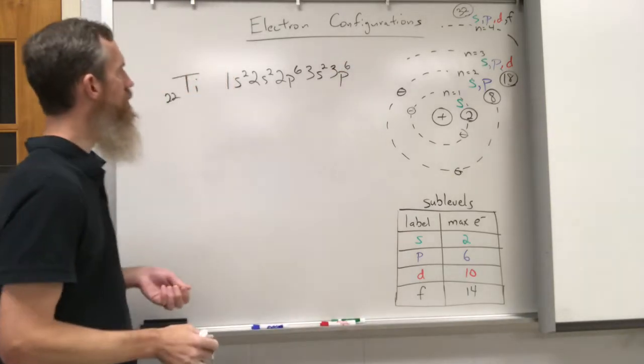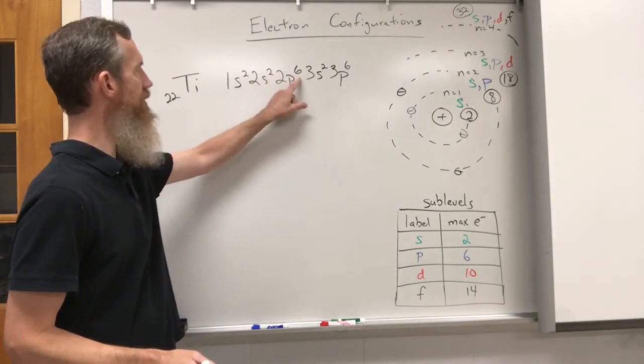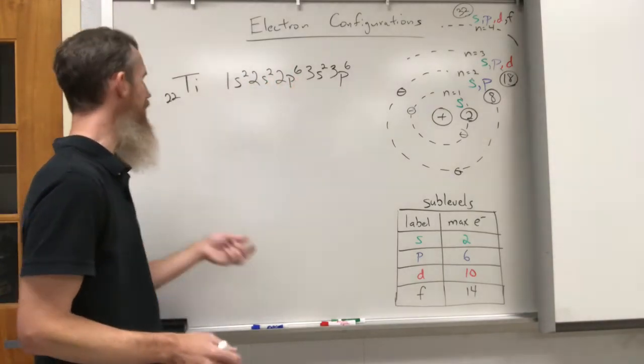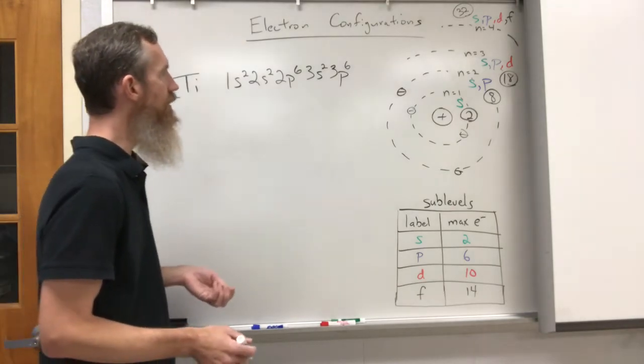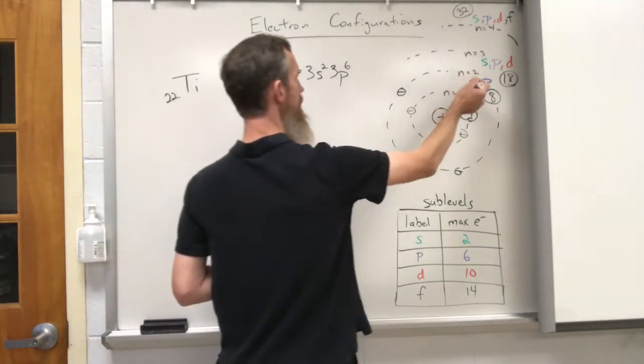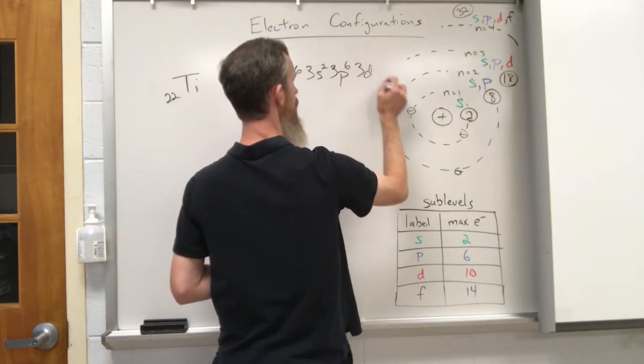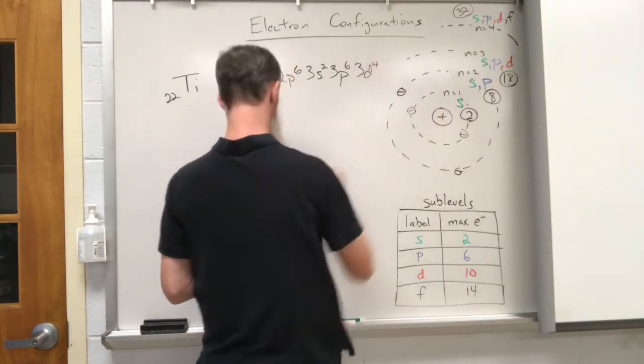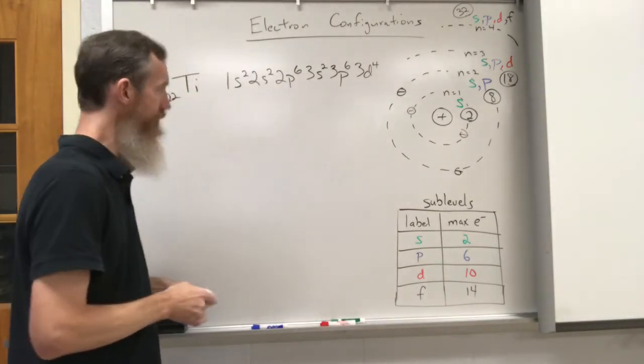So let's pause right here: 2 plus 2 is 4, plus 6 is 10, plus 8 is 18. 18 electrons, four more to go. And so you're like, okay, well third sublevel I did the s, I did the p, I'm gonna go to the d.